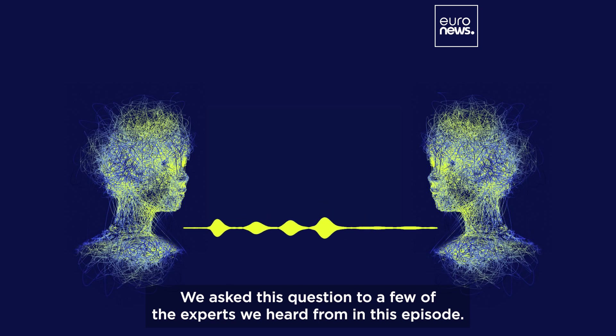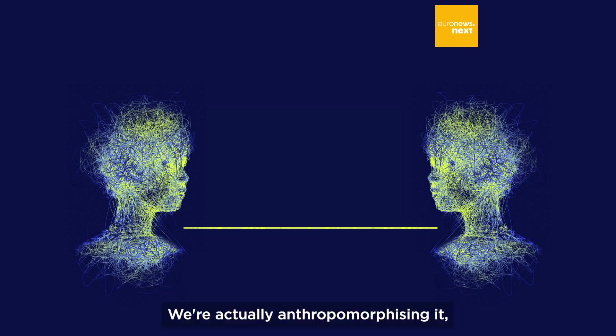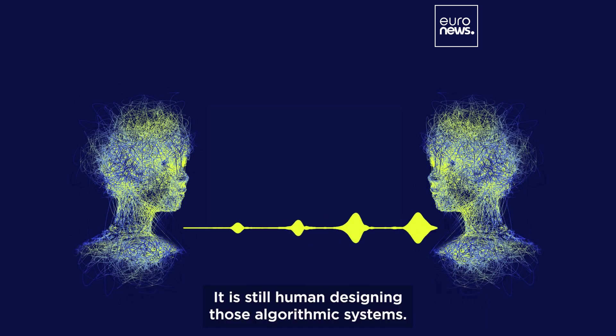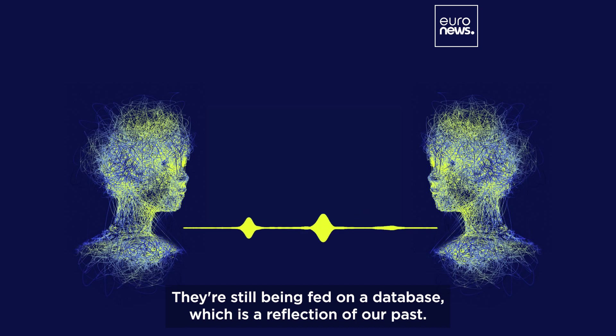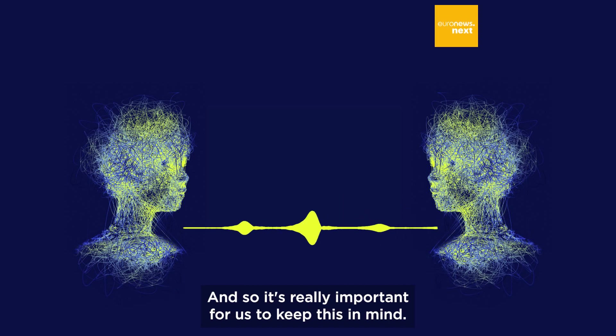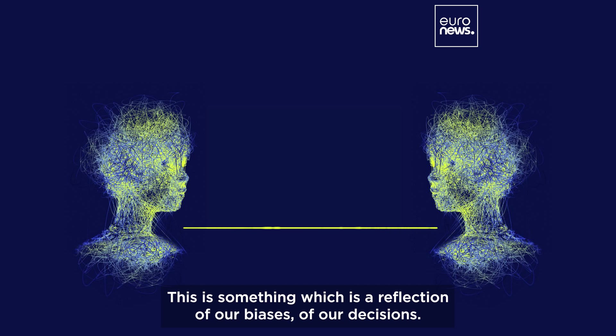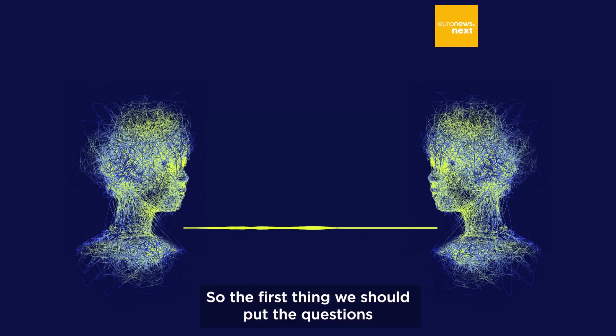Will these machines ever be able to experience true emotions or have cherished memories like those in Blade Runner? We asked this question to a few of the experts we heard from in this episode. We're actually anthropomorphizing it, and this is giving too much power to something which is still within human control. It is still humans designing those algorithmic systems. They're still being fed on a database which is a reflection of our past. So it's really important for us to keep this in mind - this is something which is within our reach, a reflection of our biases, of our decisions, and this is not a super intelligence which is going to take us over.